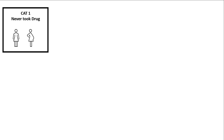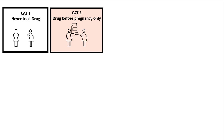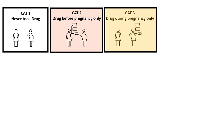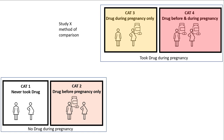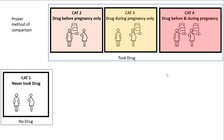What we have are four categories of women in the study: category one — those who never took the drug; category two — those who took the drug before pregnancy only; category three — those who took the drug during pregnancy only; and category four — those who took the drug before and during pregnancy. The study method compared those who took the drug during pregnancy (categories three and four) against those who didn't (categories one and two), but what we really want to know is the comparison between those who ever took the drug and those who never did.